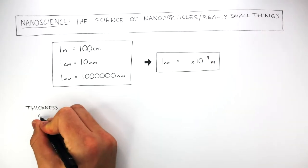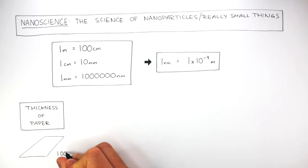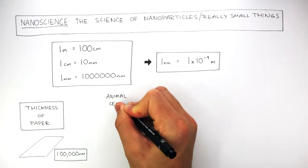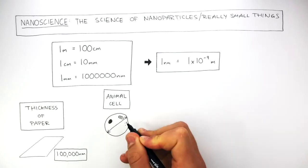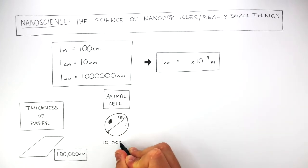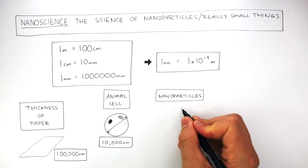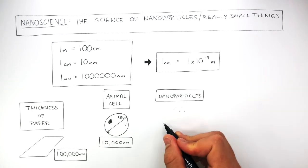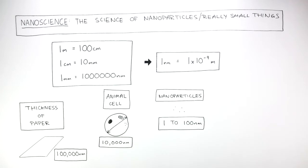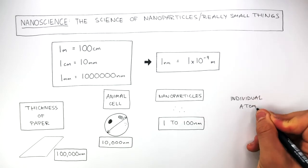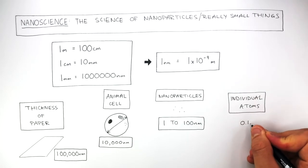So, the thickness of paper is 100,000 nanometers. An animal cell has a diameter of roughly 10,000 nanometers. Nanoparticles, represented by these dots, have a size of 1 to 100 nanometers, and individual atoms are roughly 0.1 nanometers.